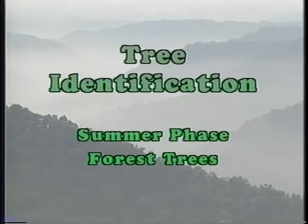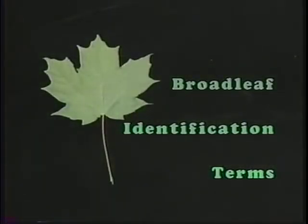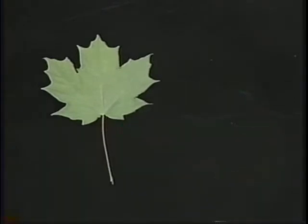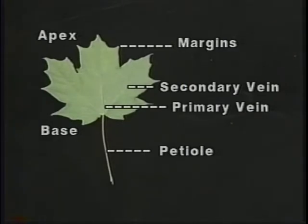Trees, like people, have identifiable characteristics that help in making each species of tree an individual. Understanding the individual parts of the leaf will help. The edges of the leaf are referred to as the margins. The top of the leaf is the apex and the bottom the base. The leaf is attached to the twig by the petiole. The veins are the structural units of the leaf, joining the petiole with the primary vein.